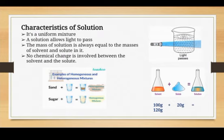In the picture you can see that a torchlight passes through a container which contains a solution. You can take the example of water — light easily passes through a container of water. The third characteristic is that the mass of a solution is always equal to the masses of the solvent and solute in it.